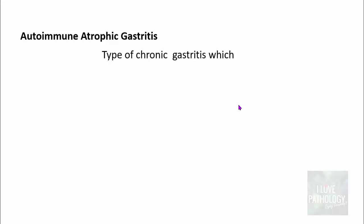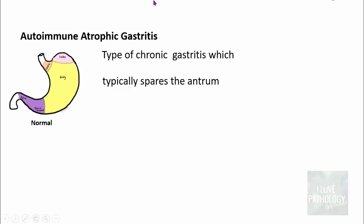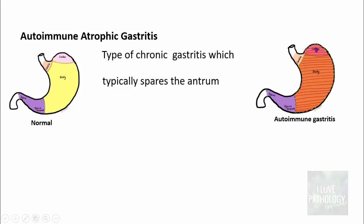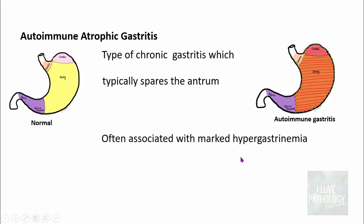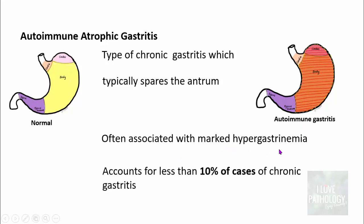Now, what is autoimmune atrophic gastritis? This is a type of chronic gastritis — similar to H. pylori-associated chronic gastritis studied earlier — which typically spares the antrum. Autoimmune gastritis affects the body and the fundus, while the pylorus is typically spared. It is often associated with marked hypergastrinemia, and accounts for less than 10% of cases of chronic gastritis.